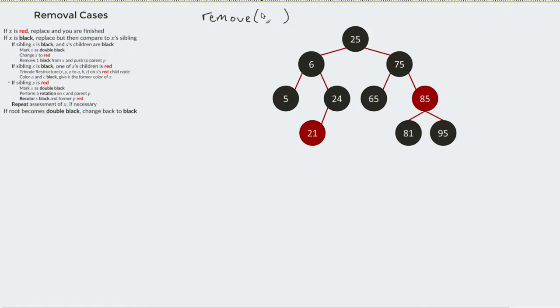But let's say, for example, I came in and I wanted to do a remove 75. So our rules would still apply. I find 75, and I would then find my in-order predecessor. In this case, it's 65.